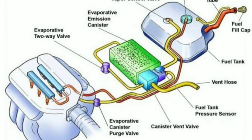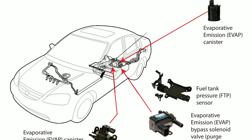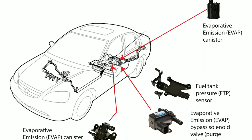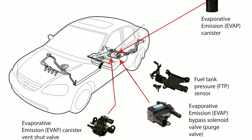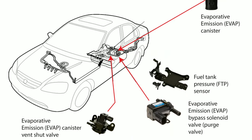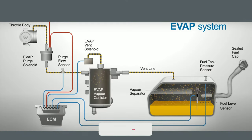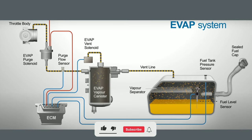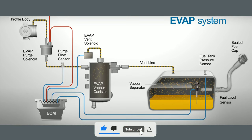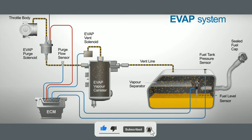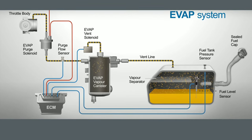These systems employ different mechanisms to prevent fuel from escaping the exhaust system. In a pressure system, the fuel tank is pressurized to prevent fuel vapors from escaping. The fuel tank pressure sensor monitors the pressure in the fuel tank and sends a signal to the ECM if the pressure exceeds a certain level.